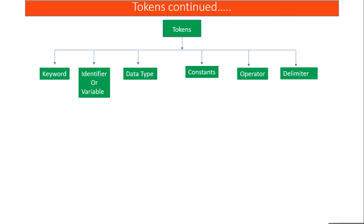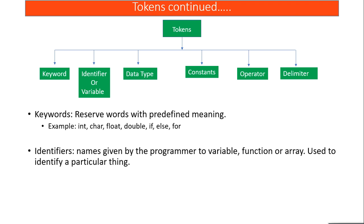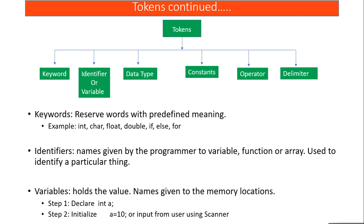Keywords are words the compiler has a predefined meaning for — this meaning cannot be changed by the programmer. Examples include int, char, float, double. Keywords must be written in lowercase. All variable names, function names, or class names given by you are called identifiers. To use a variable, we follow two steps: first, declare the variable, then initialize it with a value. So 'int a' is declaration and 'a = 10' is initialization.